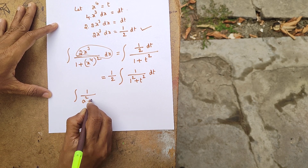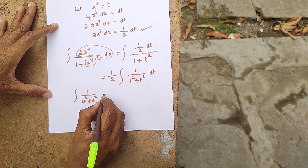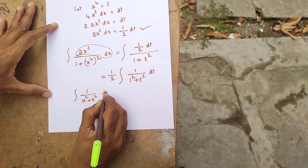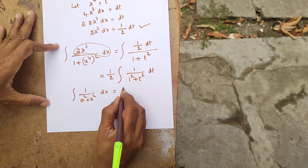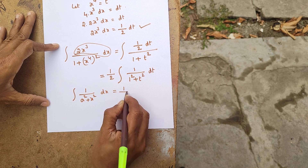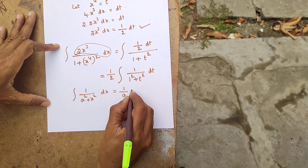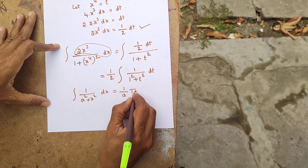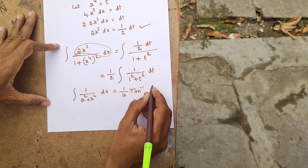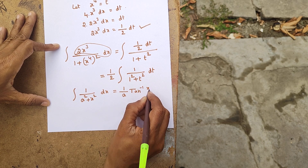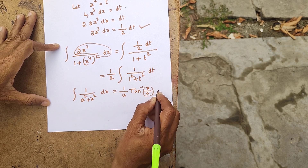Using the standard formula: integral of 1 divided by (a squared plus x squared) dx equals 1 over a times tan inverse of x over a plus c.